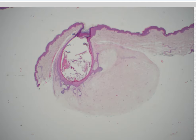So if you ever see something that looks like a fibrous papule — an angiofibroma with an unusual follicular structure in the middle — think about trichodiscoma or fibrofolliculoma.